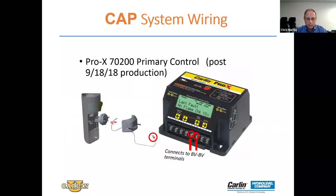All this wiring is done internally inside the burner cover. There are no external wires to run and no line voltage connection to this switch. You almost can't make a mistake unless you're trying.